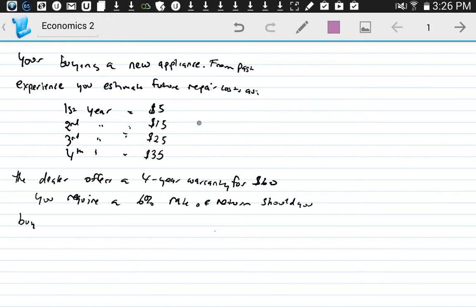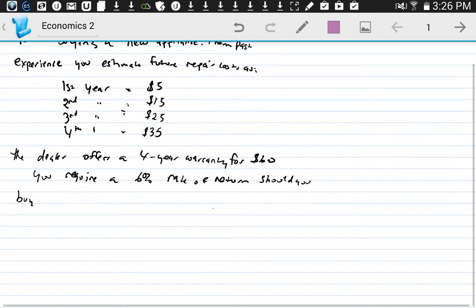Looking at the problem, you have a 6% interest rate that you want, and the warranty is for four years, and you have your four-year costs. So you're basically comparing the cost of self-insurance versus insurance. For the self-insurance, we're going to make a chart for that.